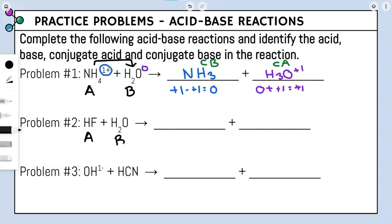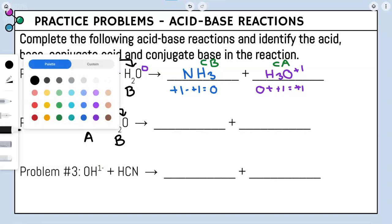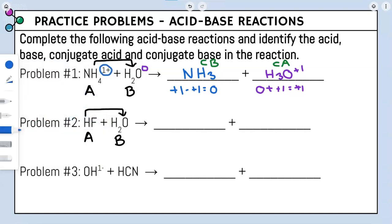With an acid, we are losing a hydrogen. Looking at our acid, we lost a hydrogen, so what's left over is just fluorine. It does not have a charge, so we have zero, but we lost a hydrogen — a plus one — so our charge is negative one.